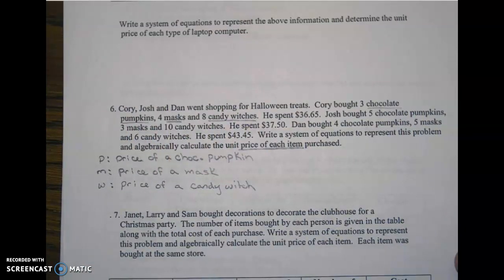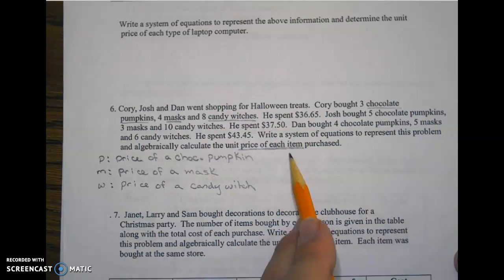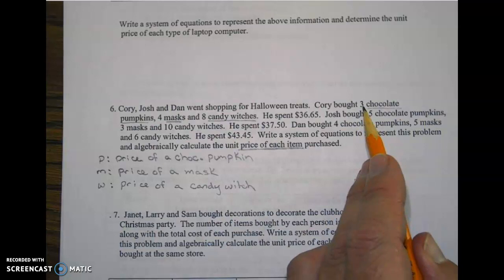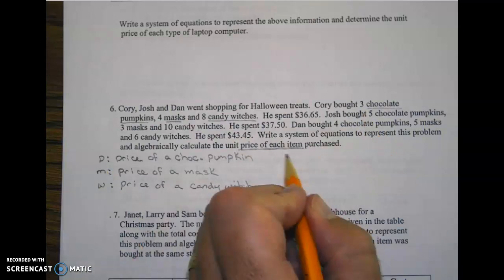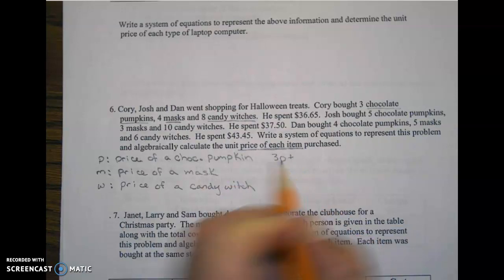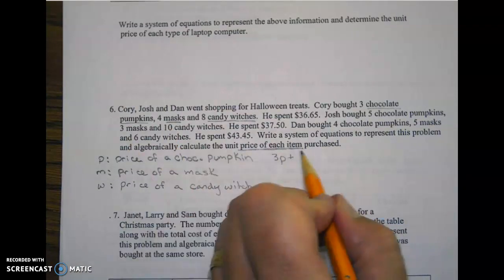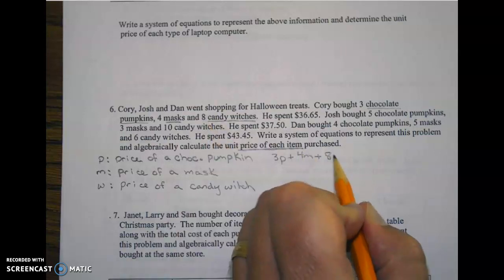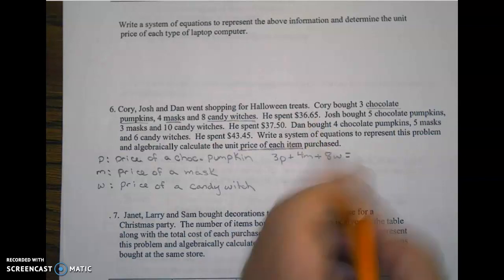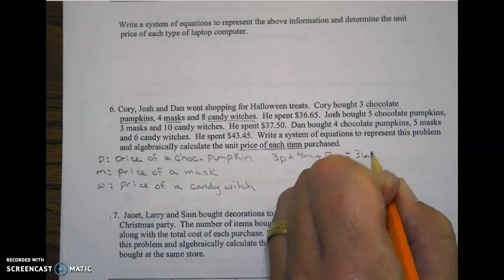Once we define our variables, chocolate pumpkins, masks, and candy witches, that's the three things we're looking for, the price of each item. Let's set up our first equation. We got three of these, so 3p plus we also got four masks, 4m, and we got eight candy witches, 8w. The total cost is going to be $36.65.